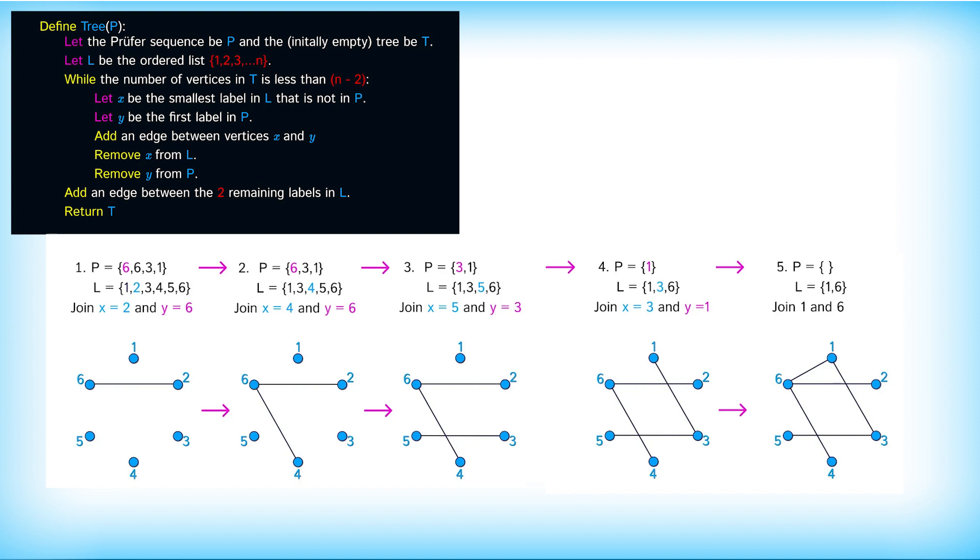Again the key about this is that tree is unique because there's only one choice at each step. There must be a unique x which is the smallest label in l and there must be a unique y which is the first label in p.